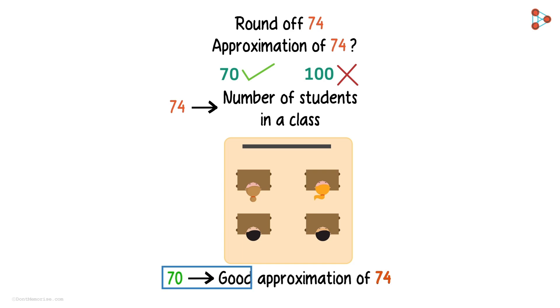So we can say that around 70 students were present on Monday. So in this situation, 70 is a reasonably fair approximation of the number 74.